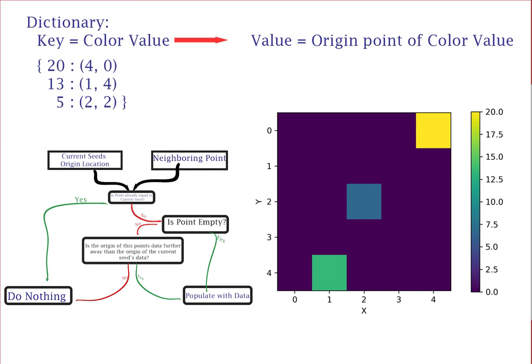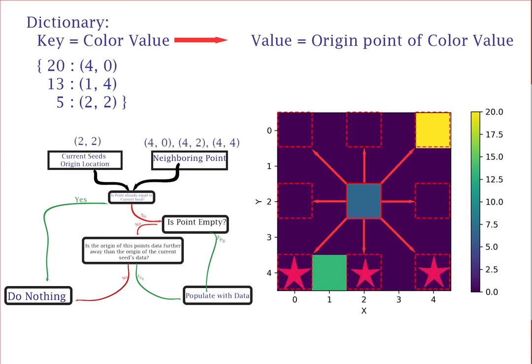You will be able to see all of this in action just a few steps into this small example. Since the three bottom points being looked at from this seed are all empty, the algorithm will fill them in.